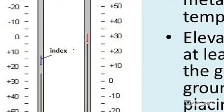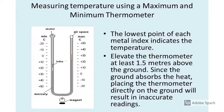For example, looking at the index on the left — the blue index — we read the bottom of the index, which gives approximately 20 degrees. If you mistakenly read the liquid level, you would get a reading of 25 degrees. Similarly, on the right-hand side — the maximum thermometer — the temperature recorded is close to 25–26 degrees.